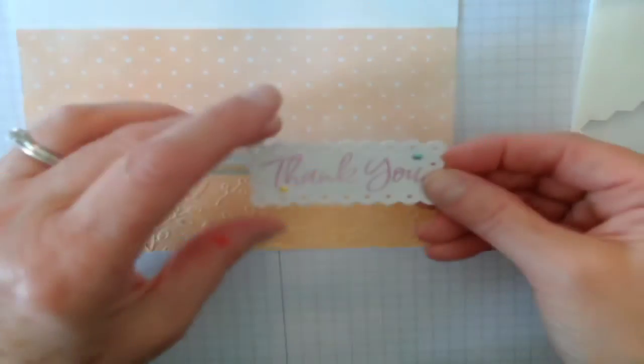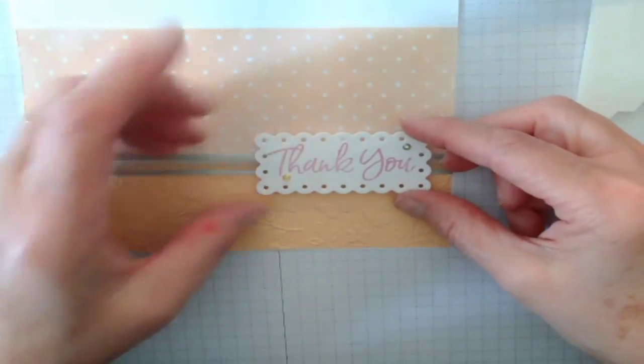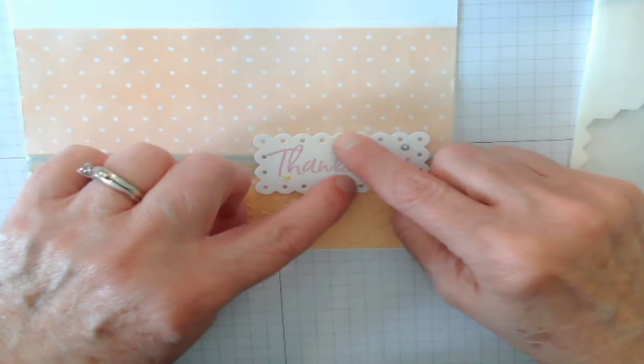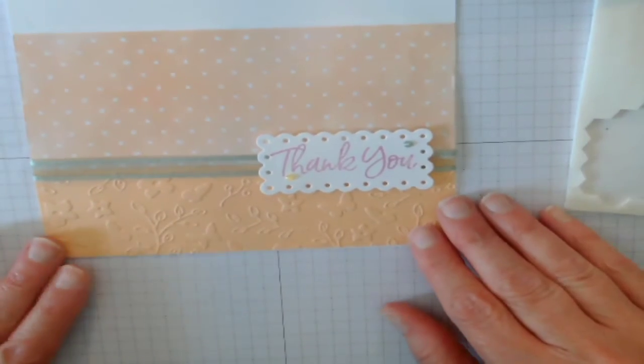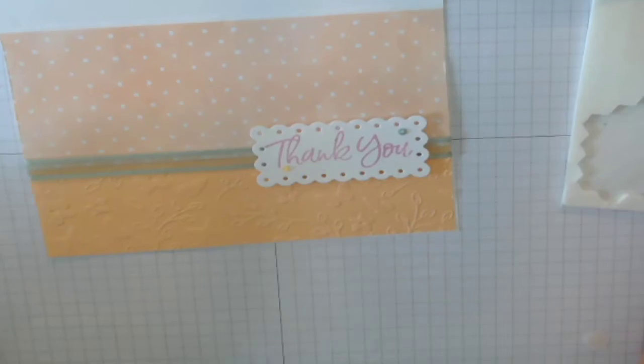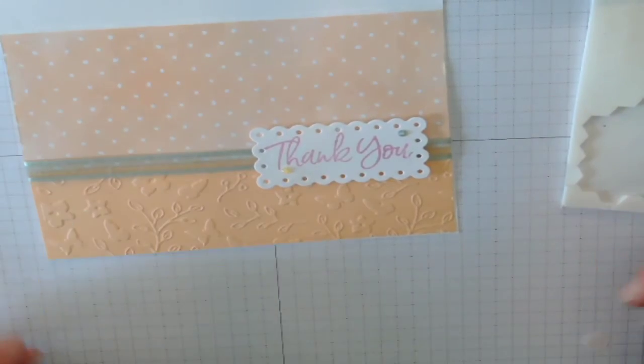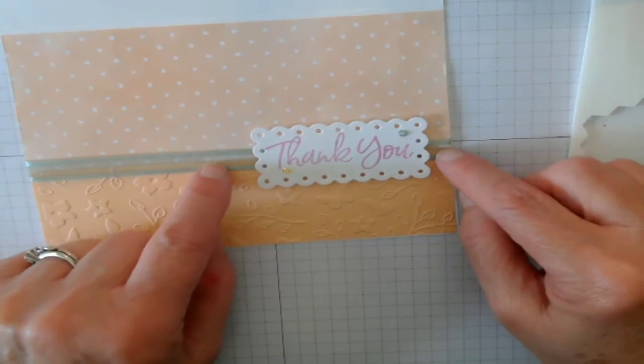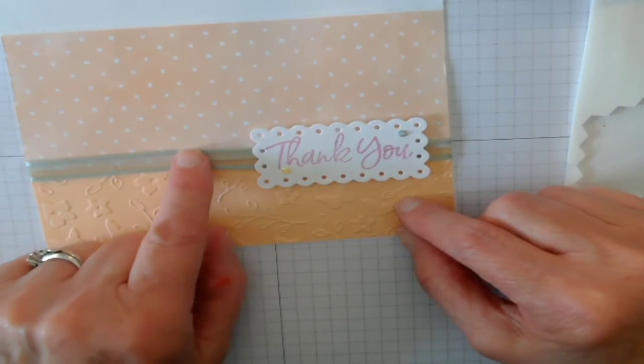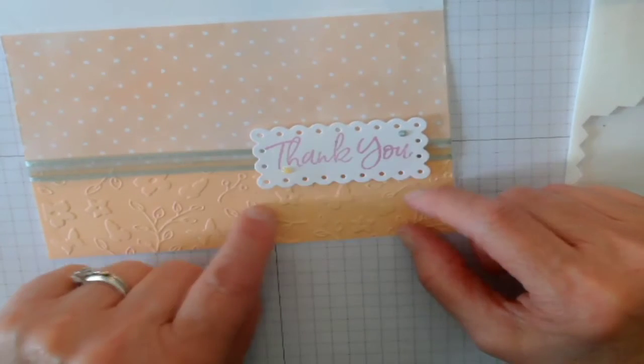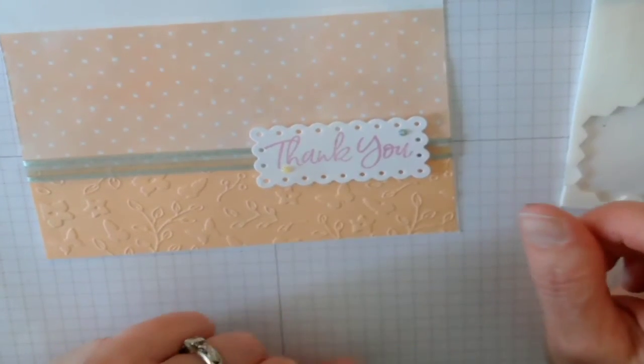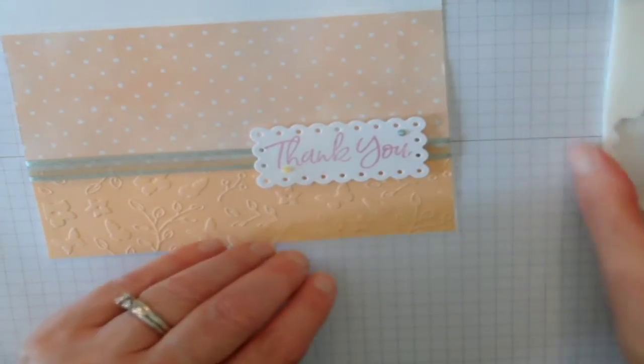We're going to take our sentiment and put it right over here. I'm going to press it on all the ends where the dimensionals are so that it will stick right in place. The reason I put four of them on there, a lot of times the two on the ends would be fine, but they're going to lay on this ribbon, and I don't want it sliding all over the place, so that's why I put the four dimensionals on it.